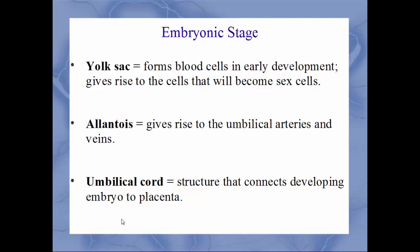Some structures found in the embryonic stage: the yolk sac, which will form blood cells very early on in development and give rise to the cells that will become the sex cells. The allantois will give rise to the umbilical arteries and umbilical vein. The umbilical cord is the structure that connects the developing embryo to the placenta — it attaches to the belly button. That's why you have that mark on the belly button; it goes from the belly button of the baby to the placenta.